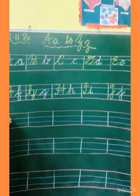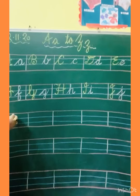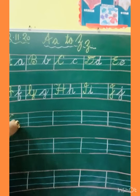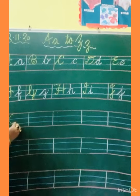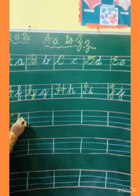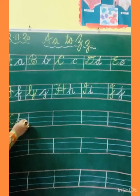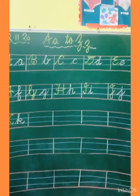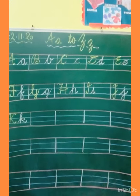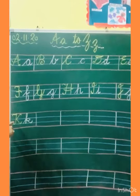Capital K: small standing line, turn, standing line, turn, then make slanting line, second slanting line, and kick. This is capital K. Now small K: slanting line, turn, make circle, slanting line, and kick. This is K.